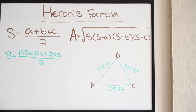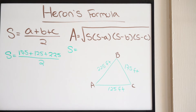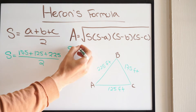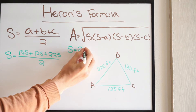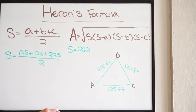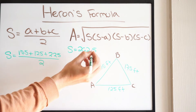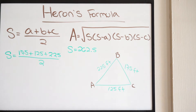Plugging that into our calculator, s is going to be 262.5. Now that we have our s value, we can go ahead and find the area of this triangle.